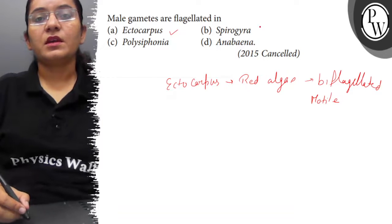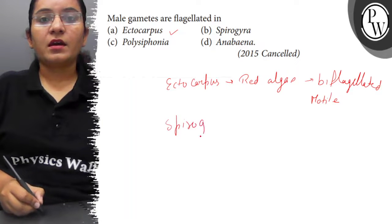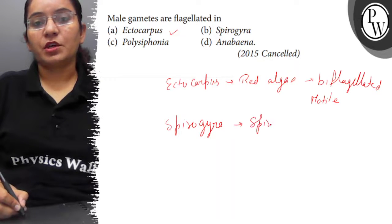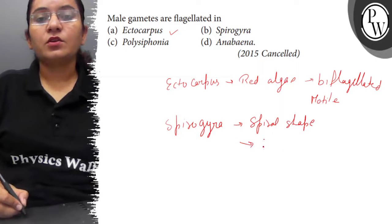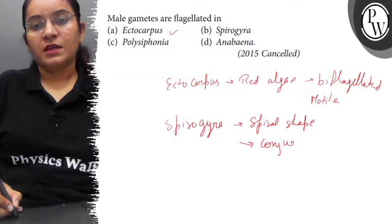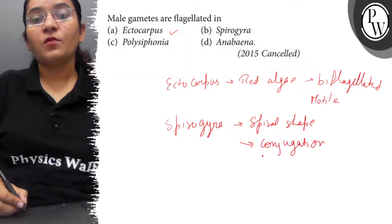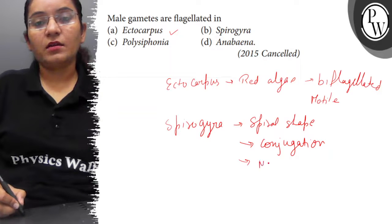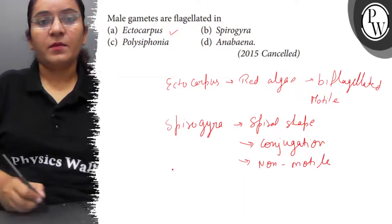Option B, Spirogyra, is an algae with a spiral shape. It reproduces sexually through conjugation, where the entire body acts as a gamete. So the gametes are non-motile — the gametes are non-motile.